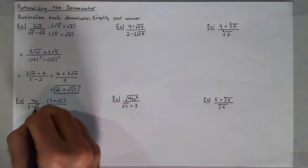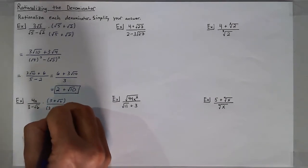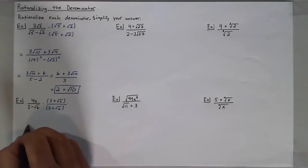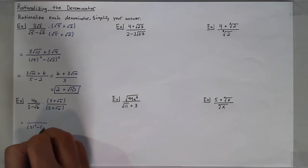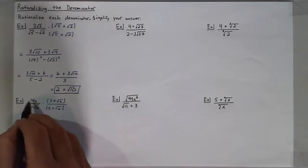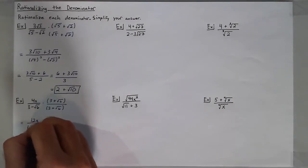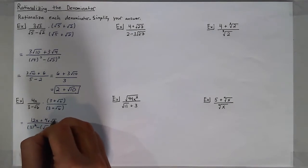So we can get rid of that square root of 6 in the denominator by multiplying by 3 plus the square root of 6. My denominator becomes 3 squared minus the square root of 6 squared. And my numerator is 4x times 3, which is 12x, plus 4x times the square root of 6.